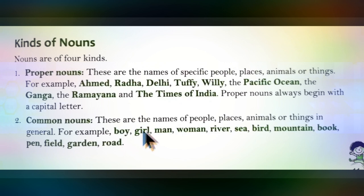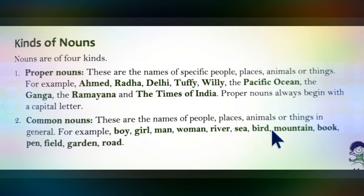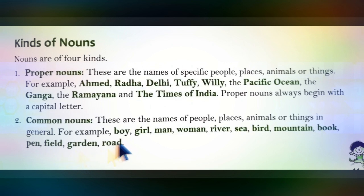Some examples of common nouns are: man, woman, river, sea, bird, mountain, book, pen, field, garden, and road. These are all examples of common nouns because they do not refer to any specific person or thing.